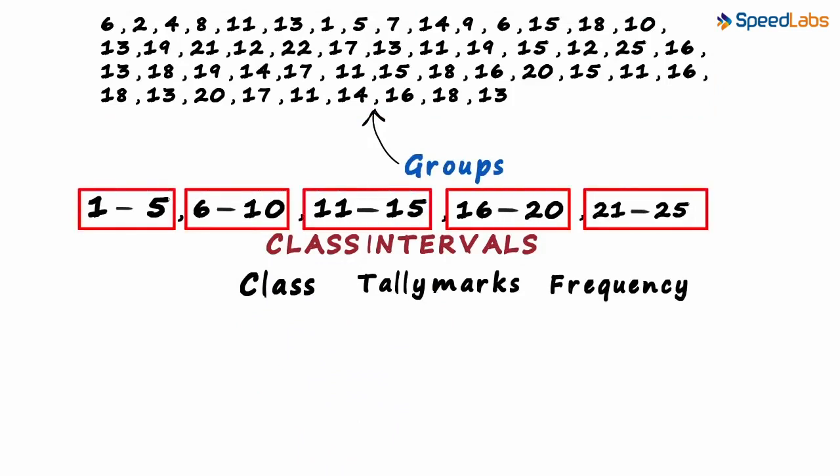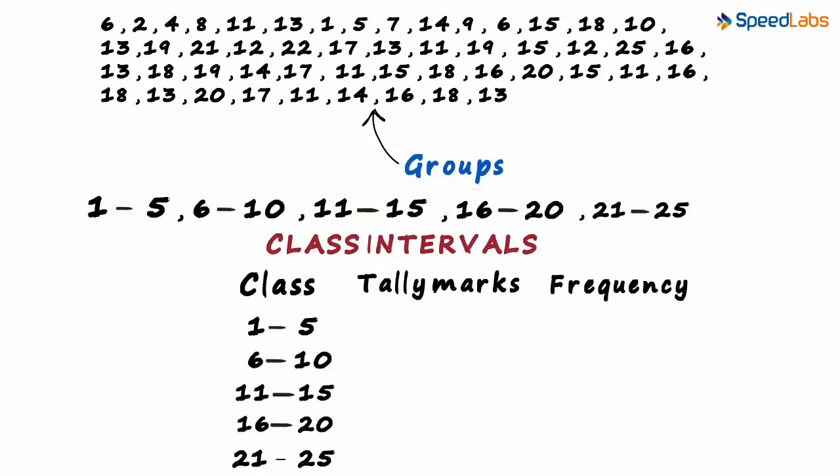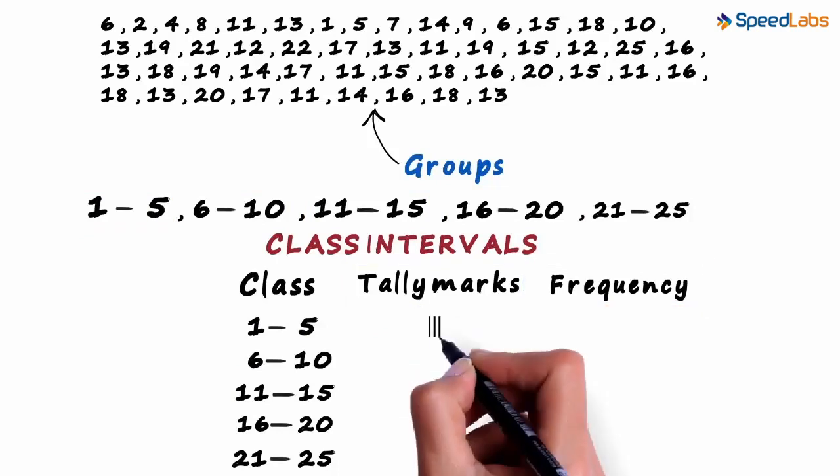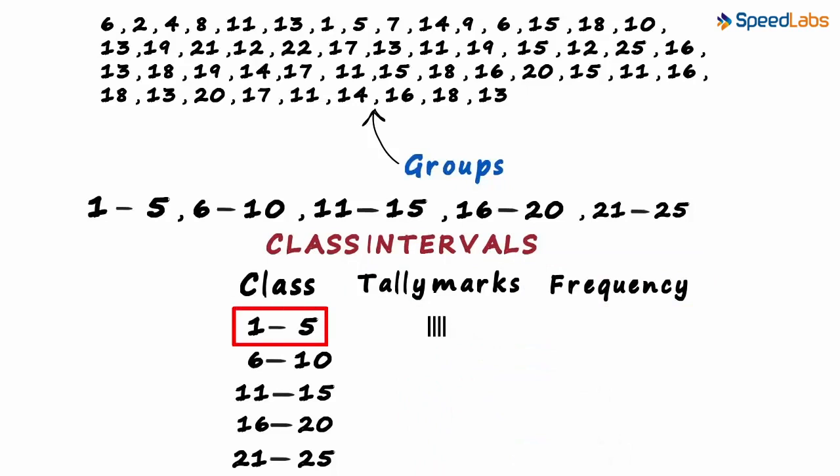We write all the class intervals in the class column: 1 to 5, 6 to 10, and so on. Just like we did in one of our videos, we use tally marks to find out the frequencies. There are four students who have scored between 1 and 5.